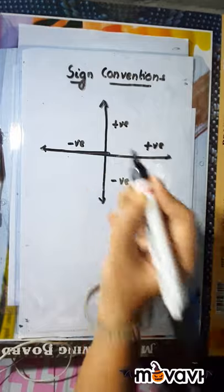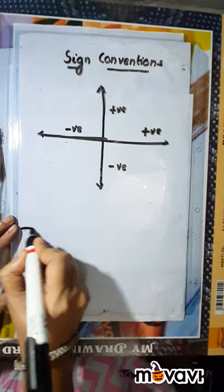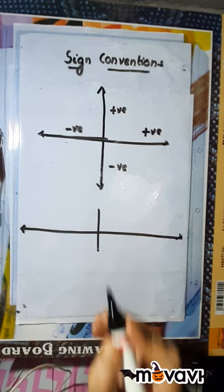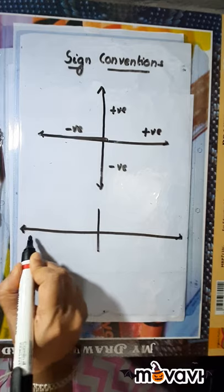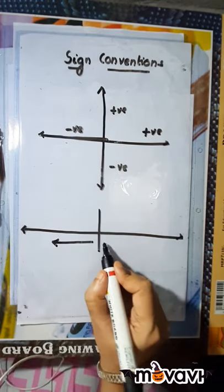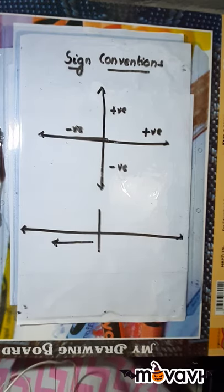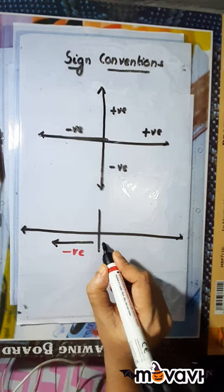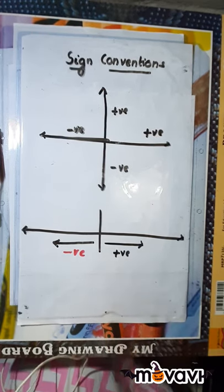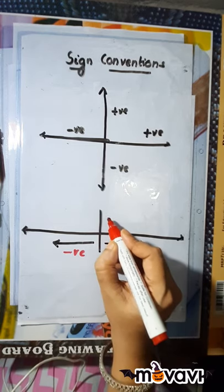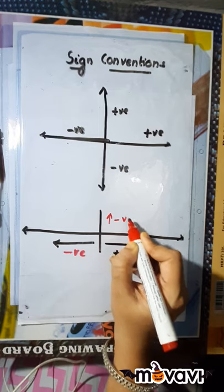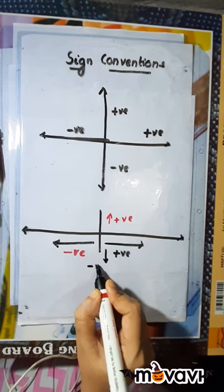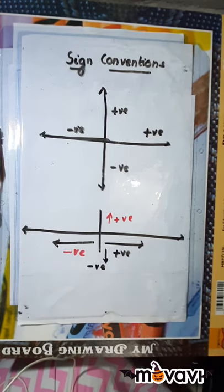This is my principal axis — if you remember, we drew the ray diagrams. This is where I place my lens, maybe concave or convex. Whatever I draw to the left of this is negative; whatever is on the other side, the right side, is positive. Above the principal axis is positive, and below the principal axis is negative.